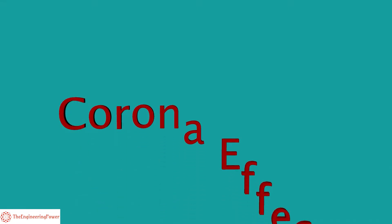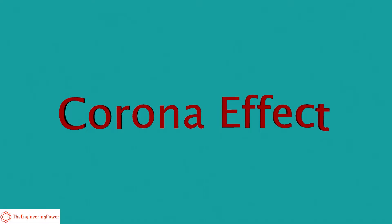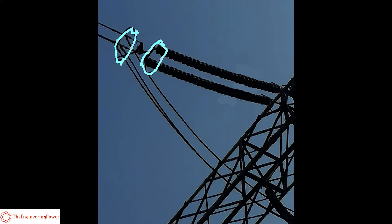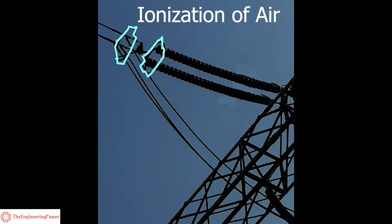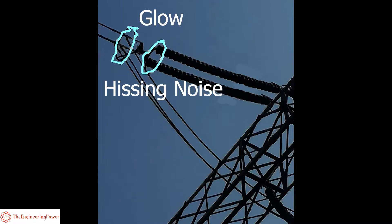We hear the word corona a lot these days, but corona is not new in the world of electrical engineering. Today we will discuss corona effect in detail. If you have ever come across high voltage electrical transmission lines, you might have seen a violet glow and heard a hissing noise. The ionization of air surrounding the high voltage electrical transmission lines, causing the conductor to glow and producing a hissing noise, is called corona effect or corona discharge.